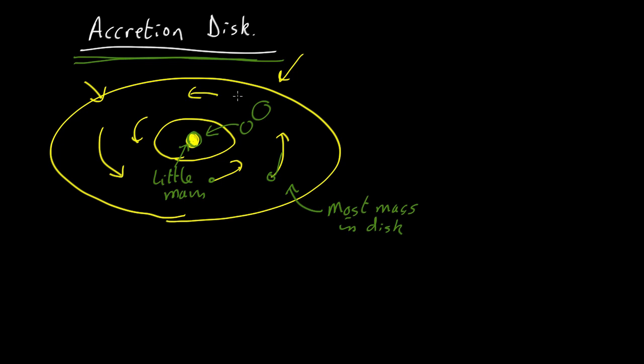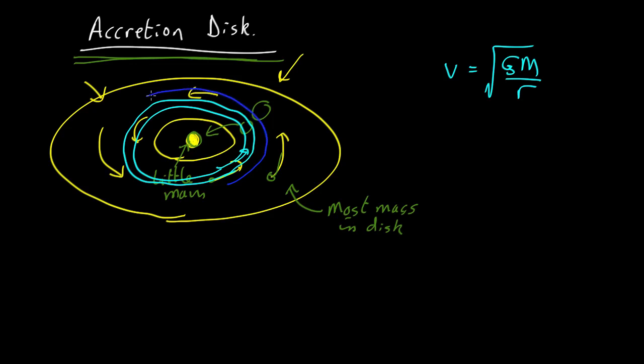Here's the basic idea. Look at this bit of the disk. Let's pick an annulus, a ring around here. Now, it's going to be moving with some velocity equals root GM over r. And now, let's consider the next ring further out. It's a little bit further out, so this one is going to be r1, and this one's going to be GM over r2. So, here's r1, and there's r2.